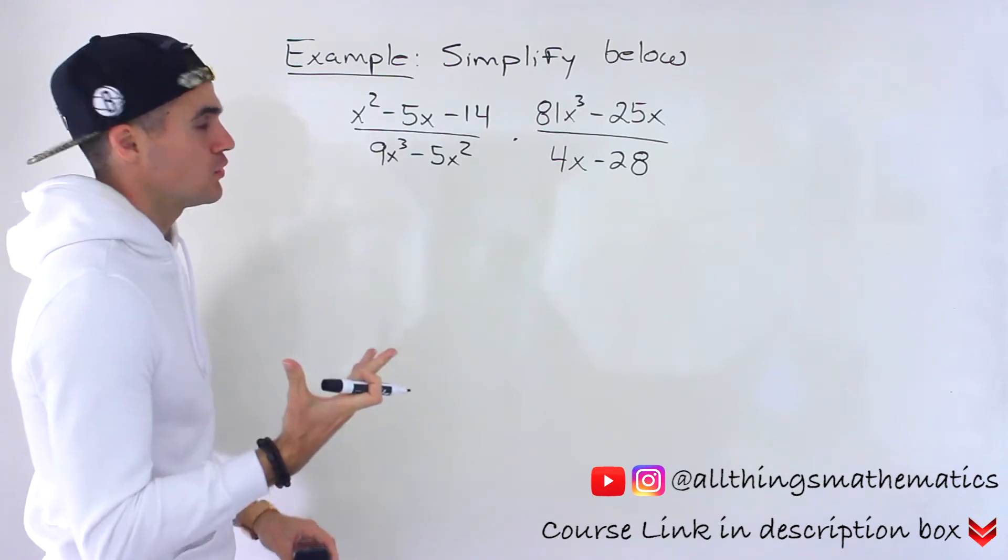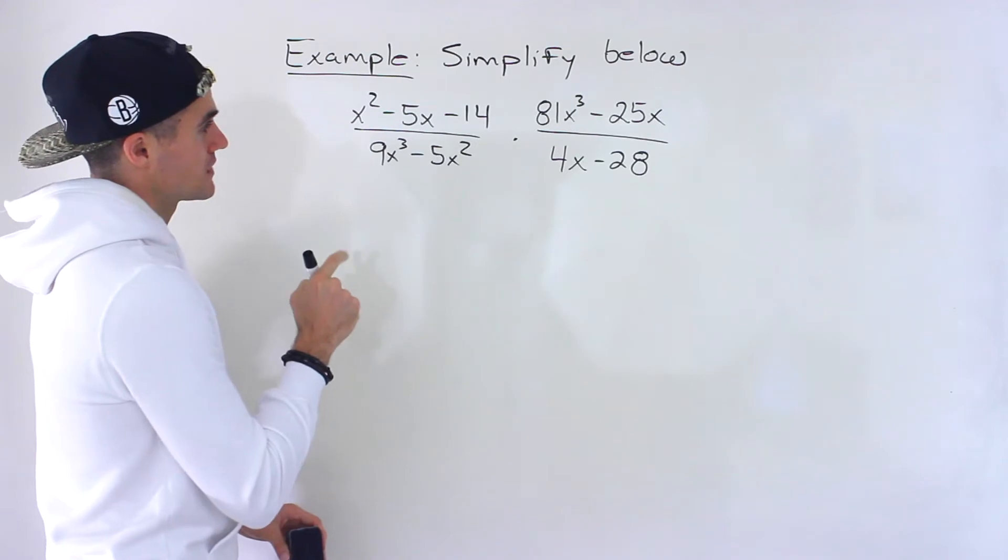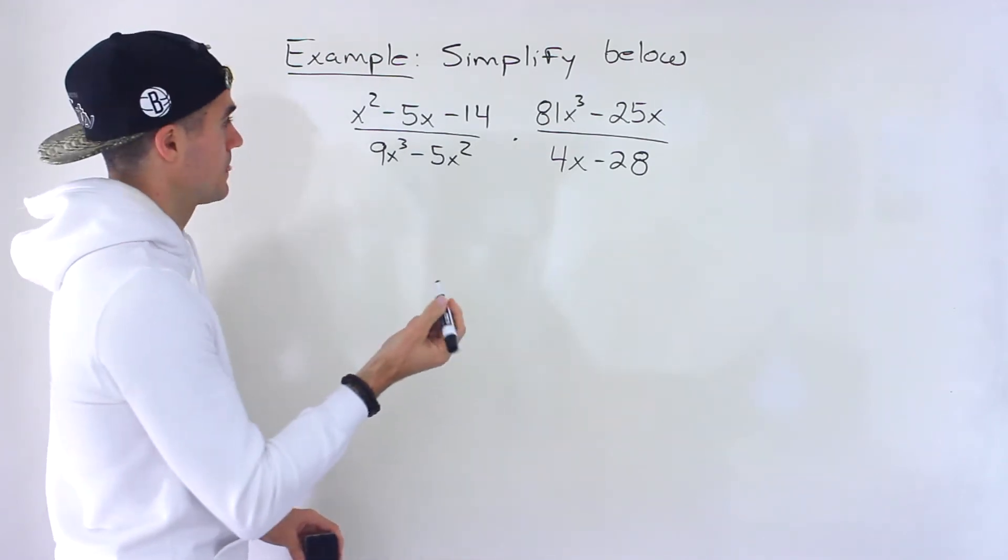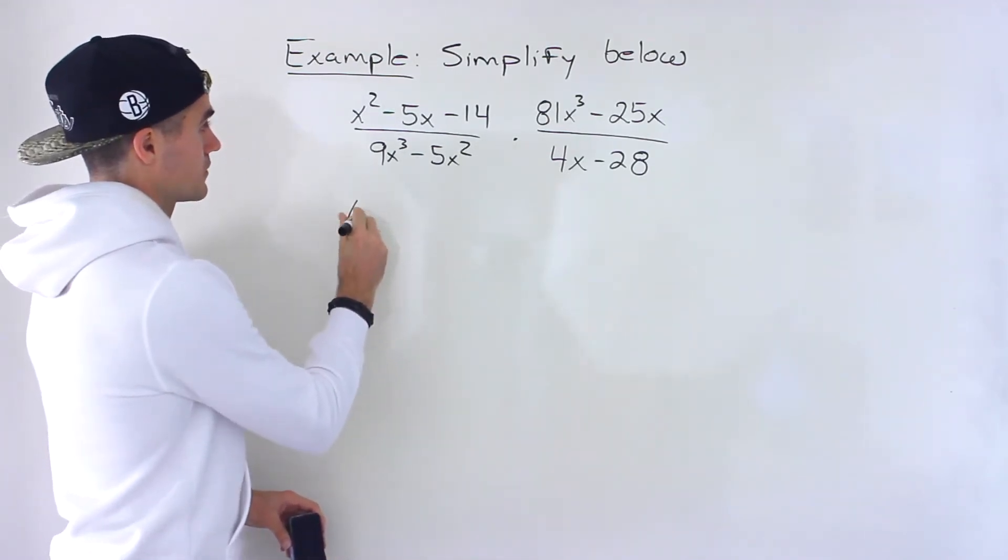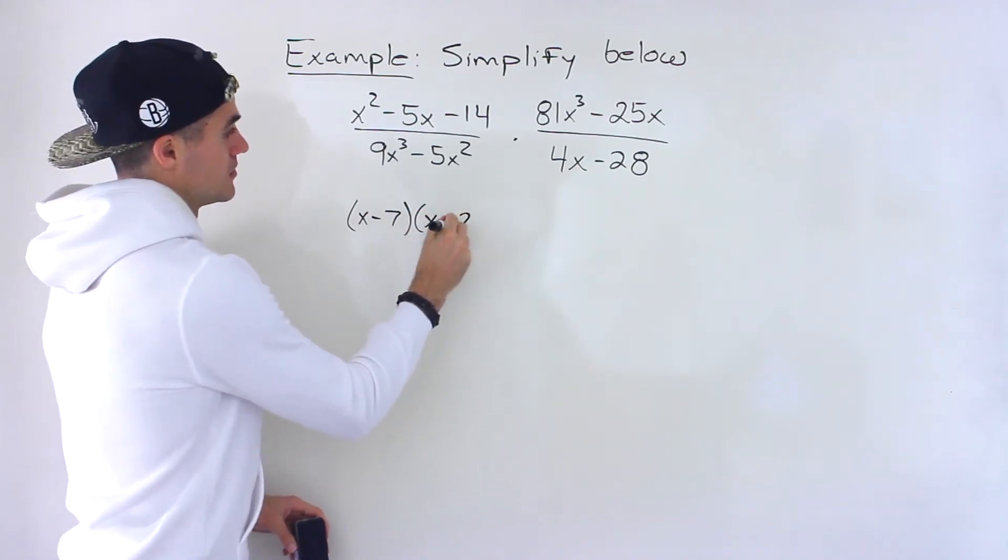Now, as usual, first step, you want to factor everything. So starting with the numerator, we got x squared minus 5x minus 14. Notice that that would factor into x minus 7, x plus 2.